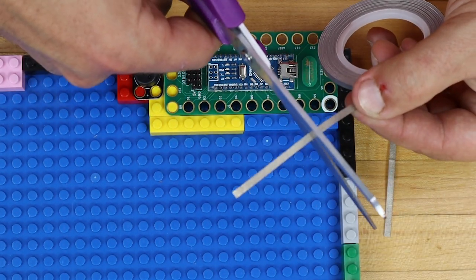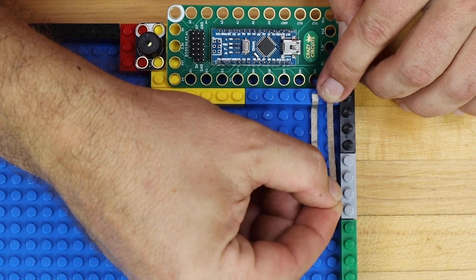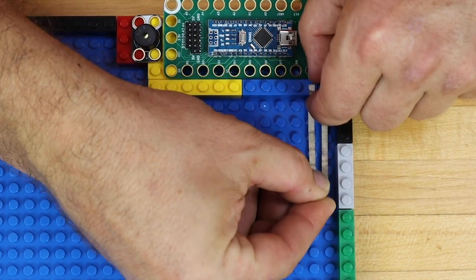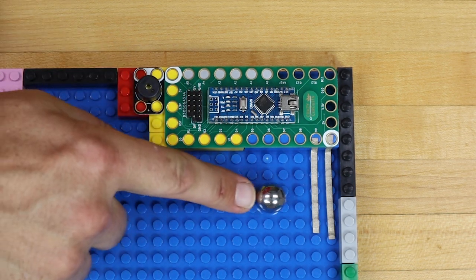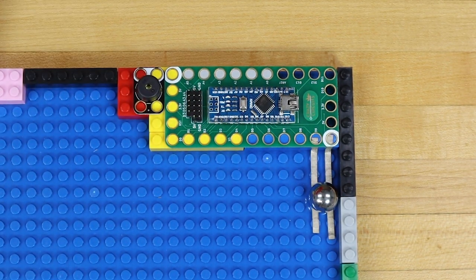Then we'll stick down some conductive tape. Here we're using D9 and the ground to make a simple button or switch. When the ball bearing touches both, it completes the circuit and activates the programming.